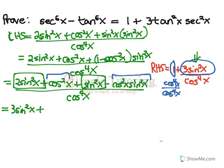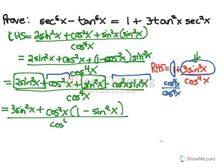And I'm left with 1 minus sin²x. That should jump out to us at this point because we know 1 minus sin²x is cos²x. So this leaves us with 3sin²x plus cos²x times cos²x is cos⁴x all over cos⁴x.